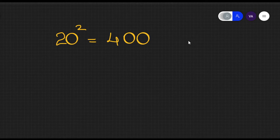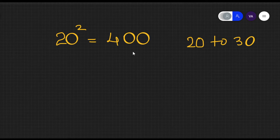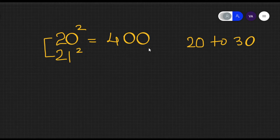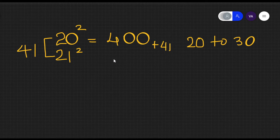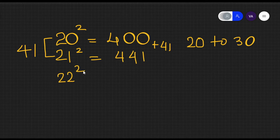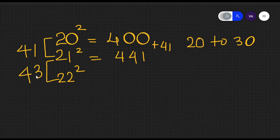Now suppose your teacher has asked you to write the square numbers from 20 to 30 and you are clueless. You can do it in just a few minutes if you know the fact that the sum of consecutive numbers equals the difference of their squares. So 20 plus 21 is 41 — add 41 to 400 and you get the square of 21. Then for 22 squared, 21 plus 22 is 43.